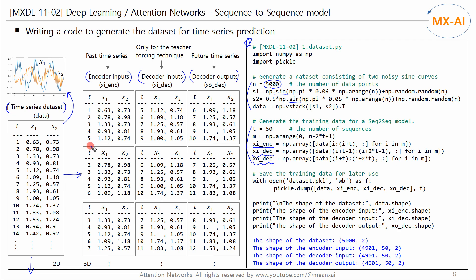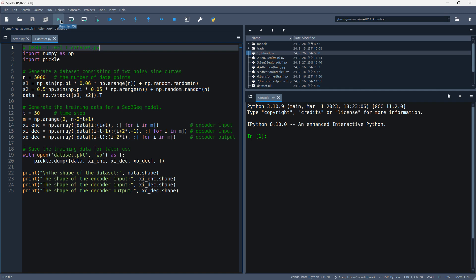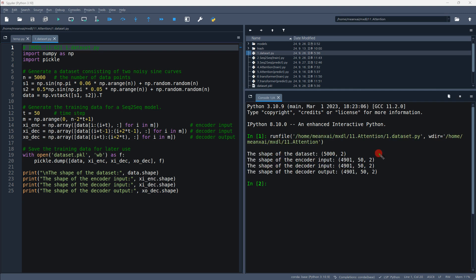In the left figure, the number of sequences in each subset is 5, but in this code it is set to 50 to learn dependencies of longer sequences. We save this training dataset for later use. It will be used not only for the sequence-to-sequence model, but also for the attention model and transformer model that we will implement later. The shapes of the training dataset are all three-dimensional. Let's run this code — the shapes are as shown, and it is saved in the dataset.pkl file.